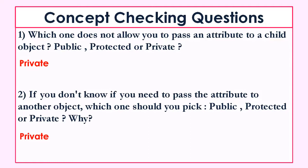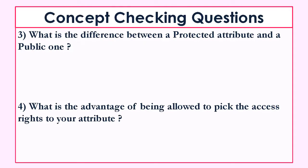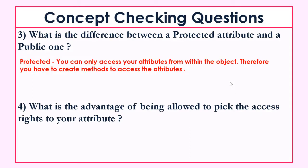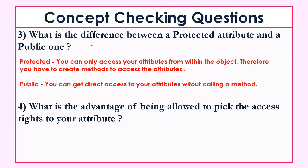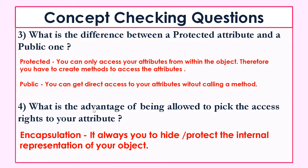What is the difference between a protected and a public attribute? Protected means you have to use a method to access the attribute — if you try to call it directly, there will be an error. Whereas a public attribute can be directly accessed without a method. And what is the advantage of picking these access rights? This is all about encapsulation — it allows you to hide or protect the internal representation of your object, limiting access to attributes that don't need to be used by other objects.